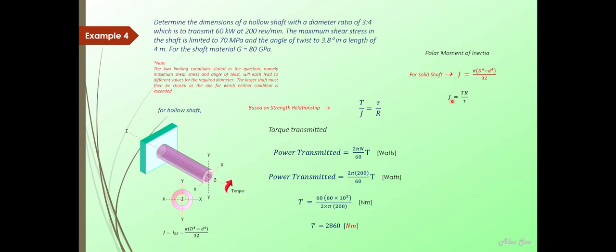So you have this, 2.86 times 10 to the power of 3, that is the torque. The radius there is the diameter divided by 2, and the shear stress is 70 MPa. Based on this, we can work out the J. And also we know that the diameter ratio, it should be 4 over 3 of D. If this uppercase letter D here is the external diameter, this is the internal diameter, so it should be 4 over 3, not 3 over 4. From the diameter, the external diameter, we have 67.3 mm for the external diameter, and the internal diameter is 50.5 mm.